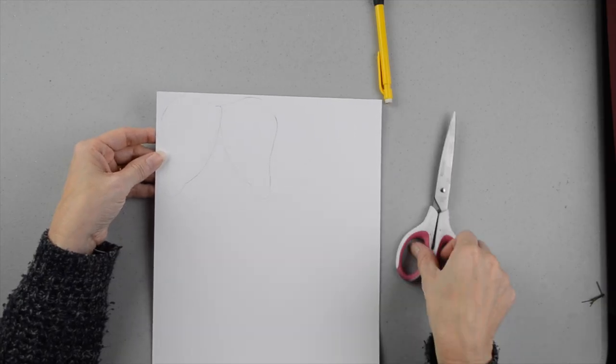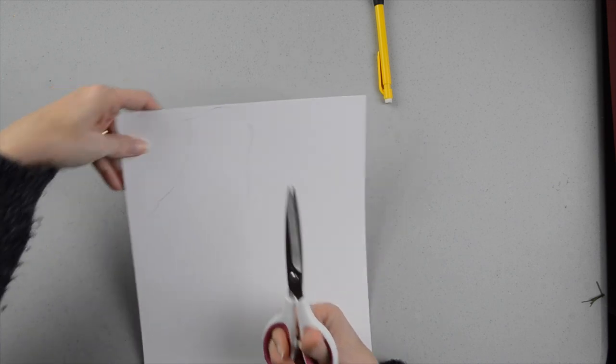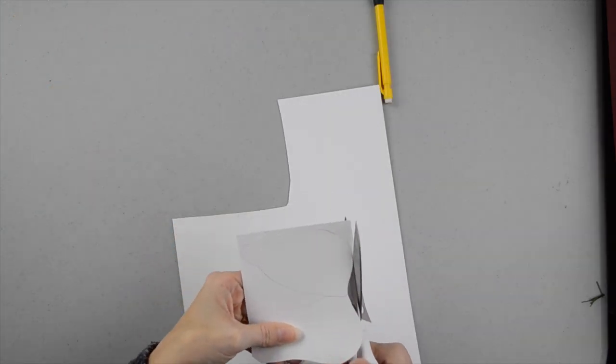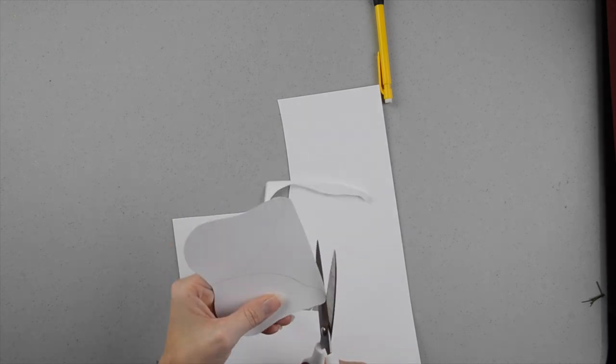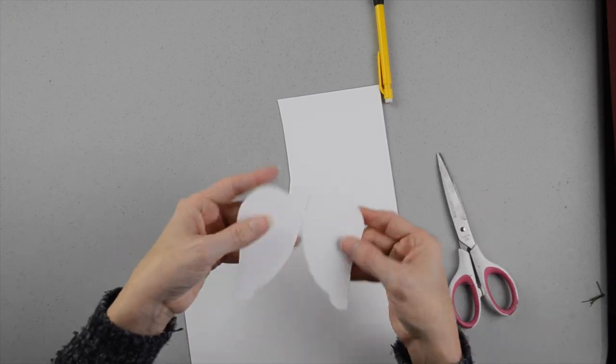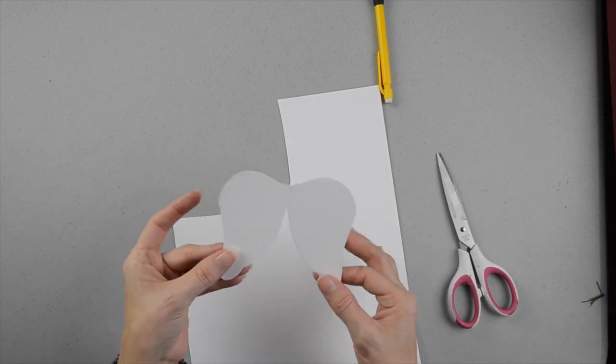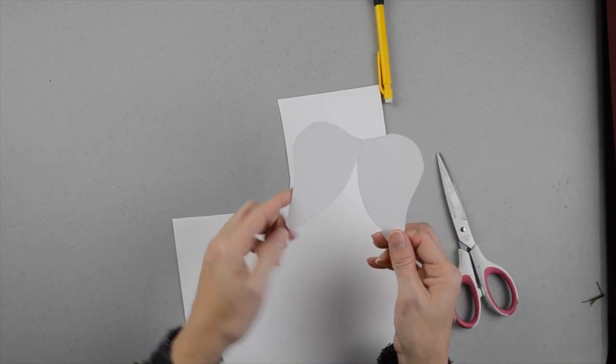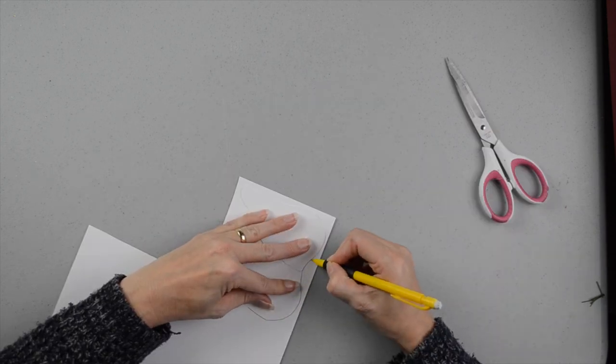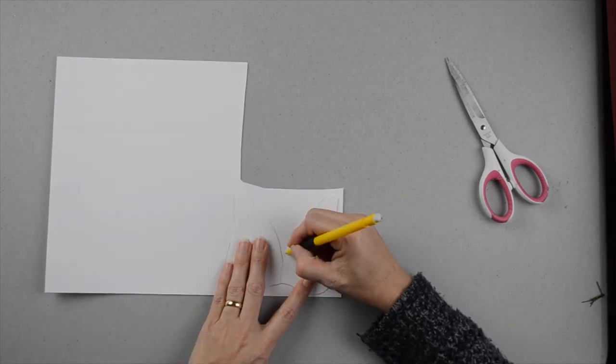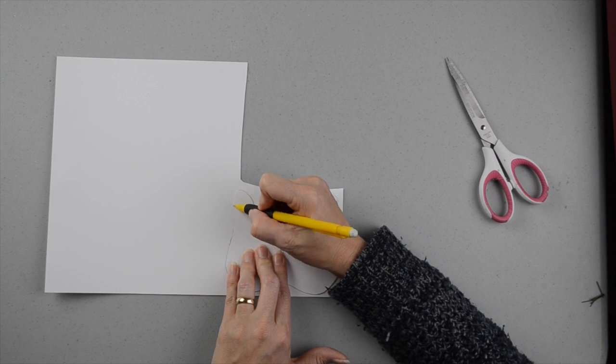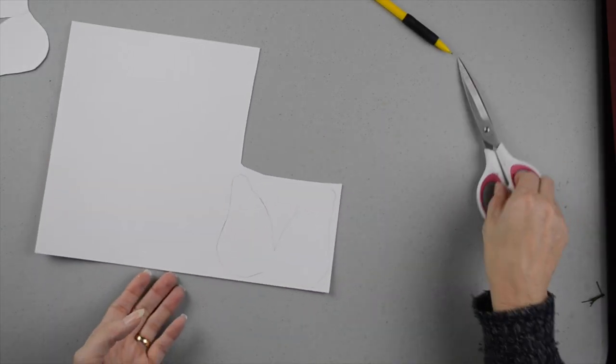I have my wings traced out onto the paper and now I'm going to cut them out. So now I have one pair of wings cut out. I am going to trace this and make a second pair just because I want them to be a bit heavier material. Now I'm going to cut out this pair.